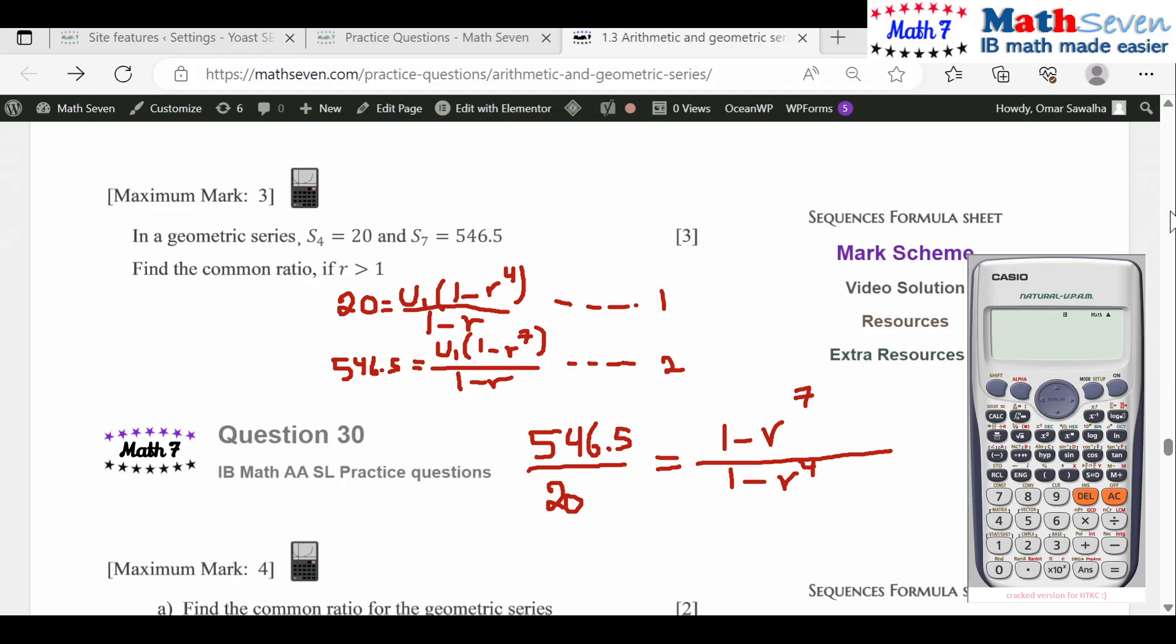Let's do the division of 546.5 divided by 20. You get this value which is 27, and then you cross multiply with this. Let me clean some of the screen here so that we can have some space.